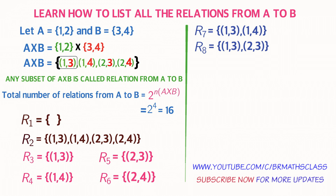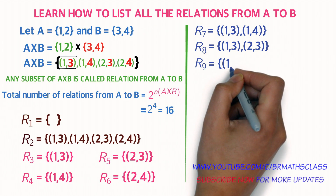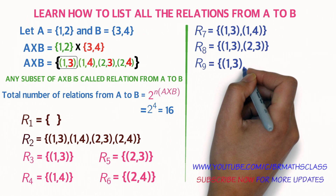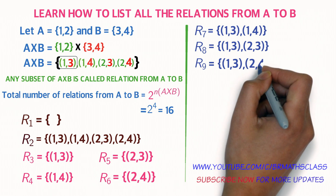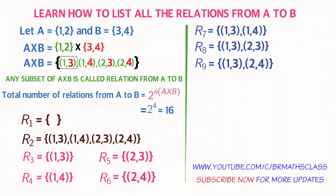R9: observe A cross B and take the first element, ordered pair (1,3). Moving right, the next element (1,4) was already used in R7, and (2,3) was already used in R8. The remaining element is ordered pair (2,4). So R9 equals the set containing ordered pair (1,3) and ordered pair (2,4).